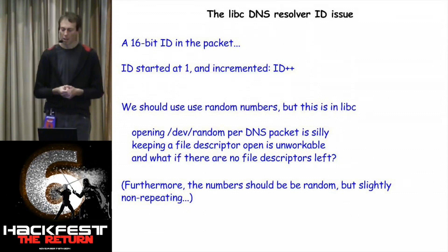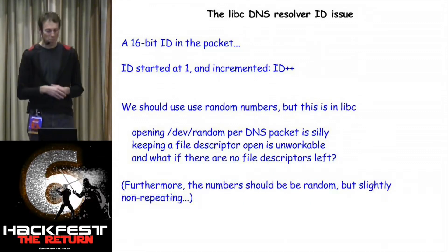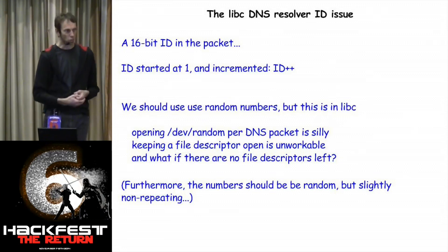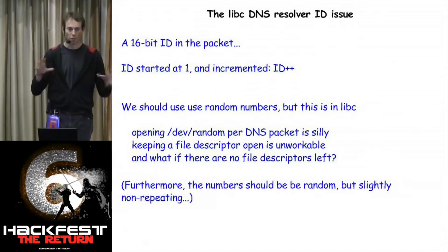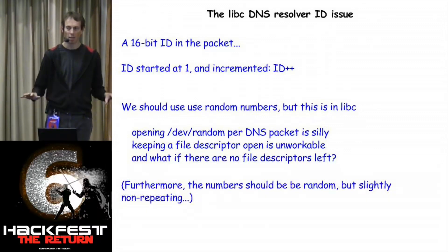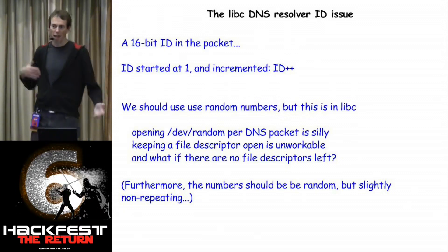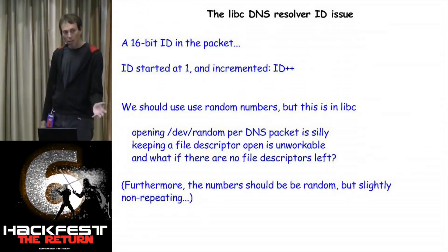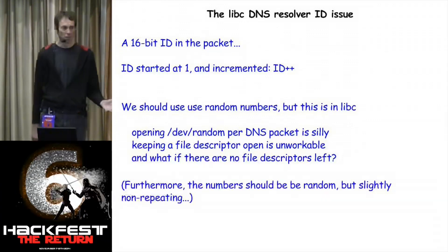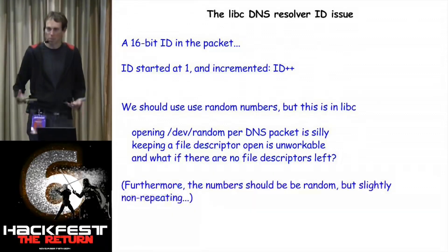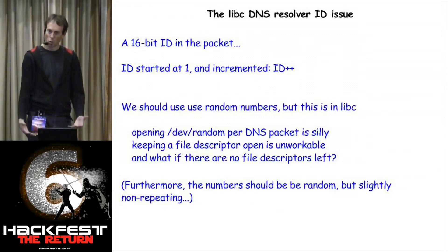It's libc and the state of the art at the time wasn't very good. Were we supposed to open /dev/random every single time we want to set a DNS packet? That's just crazy — it's a huge resource and you can't keep a file descriptor inside libc. Various layers have the approach of allocating file descriptors, using them, and dropping them, because you don't want a retained file descriptor accidentally colliding with application code. And what if there are no file descriptors available because you're at your resource limits?